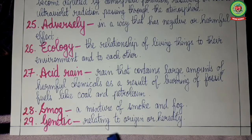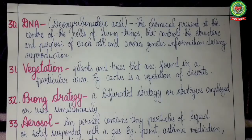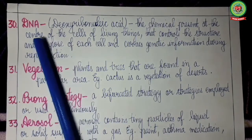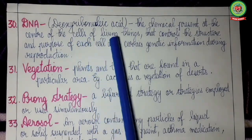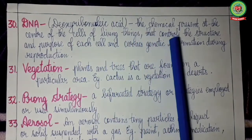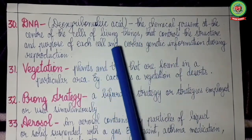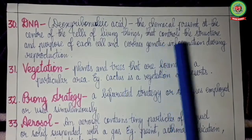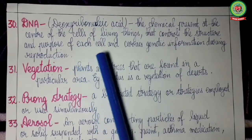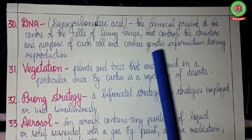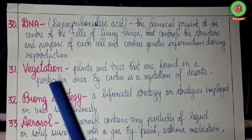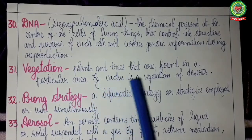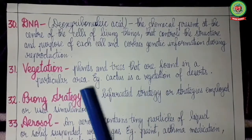Smog is a mixture of smoke and fog which is mostly produced in winter. Genetic is relating to origin or heredity. DNA: the full form of DNA is deoxyribonucleic acid, the chemical present at the center of the cells of living things that controls the structure and purpose of each cell and carries the genetic or heredity information during the reproduction. Vegetation: plants and trees that are found in a particular area, for example cactus is the vegetation of deserts.